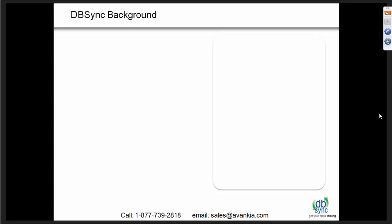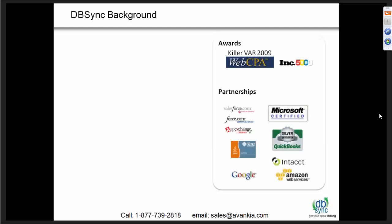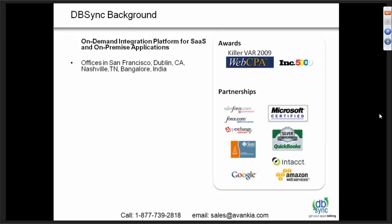DVSync is a PR integration platform where it integrates SaaS applications with any kind of on-premise application. Any combination of applications can get integrated over DVSync. We have been a part of Lovankia, and we're also a Salesforce.com consulting partner. Our head office is in Nashville, Tennessee. We also have offices in California, and we have an offshore center in Bangalore, India.